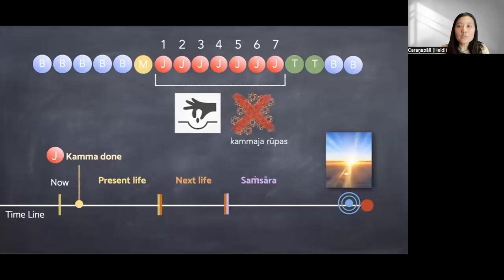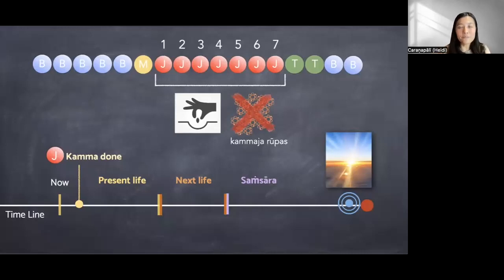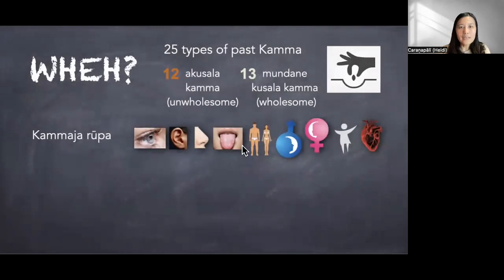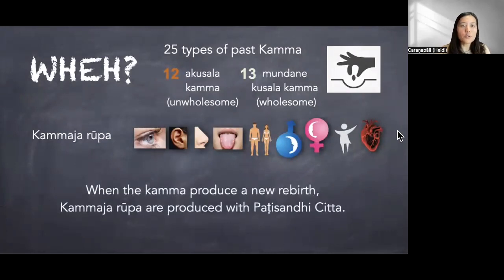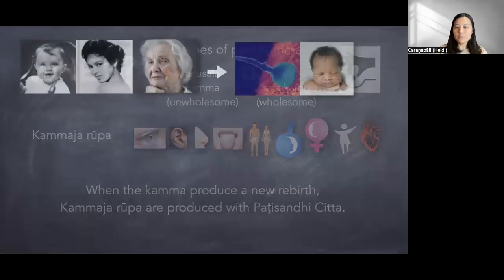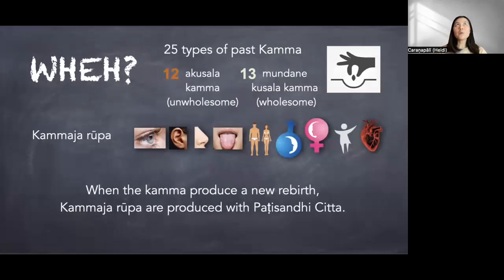Concerning jhana citta, I don't think it produces this kind of material property in the present life. If we talk about a Vipaka citta, I think it can produce material property. But concerning eye sensitivity or ear sensitivity, those will be produced in the next life, not in the present life. Heart base, gender matter — these are produced when the karma produces a new rebirth — this kamaja rupa is produced together with the Patisandhi citta.